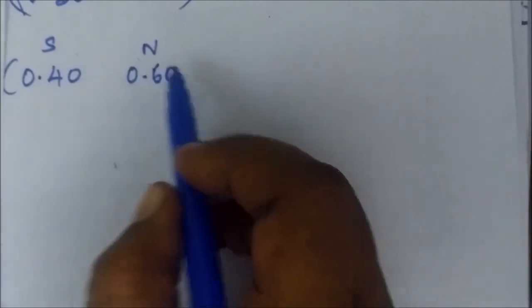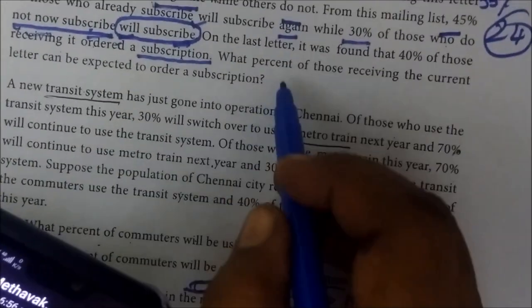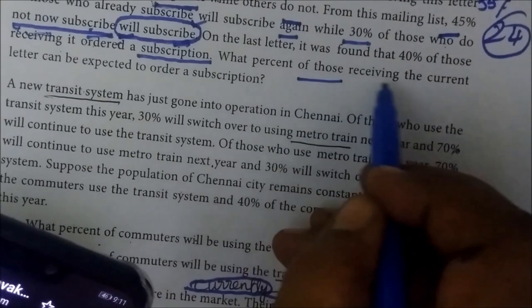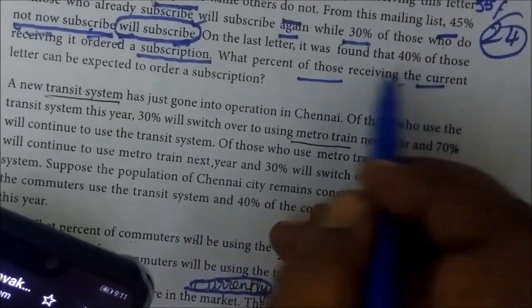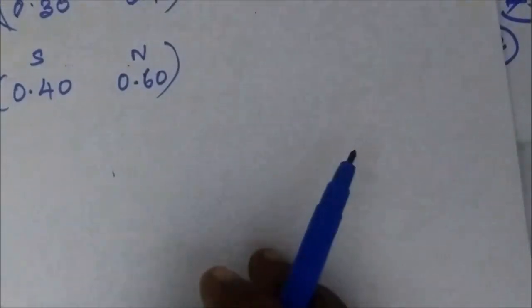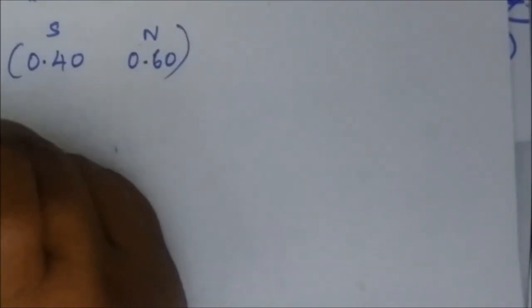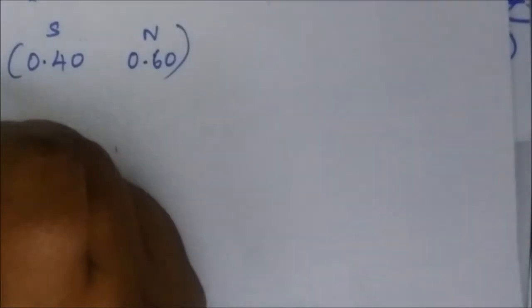30% of those who do not subscribe can be expected to order the subscription. Here we can see A, B and S — Subscription and not Subscription.